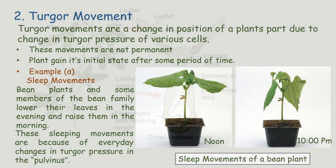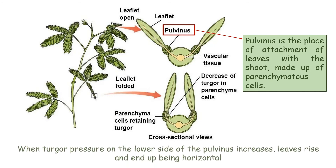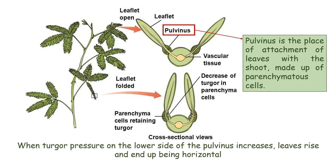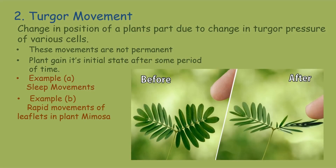These sleeping movements are because of everyday changes in turgor pressure in the pulvinus. The pulvinus is the place of attachment of the leaf with the shoot, made up of parenchymatous cells. When turgor pressure on the lower side of the pulvinus increases, the leaves rise and become horizontal. When turgor pressure reduces on the lower side of the pulvinus, the leaves lower and go to the sleeping position. Another example of turgor movements is the rapid movement of leaflets in the plant Mimosa when touched.